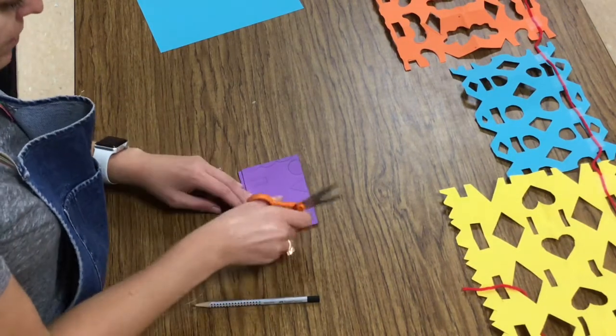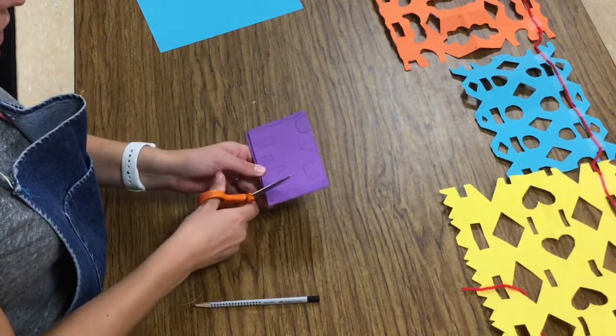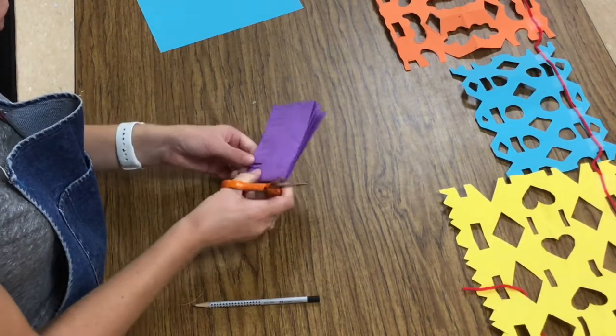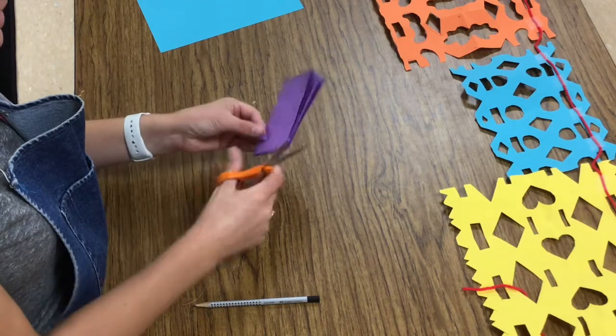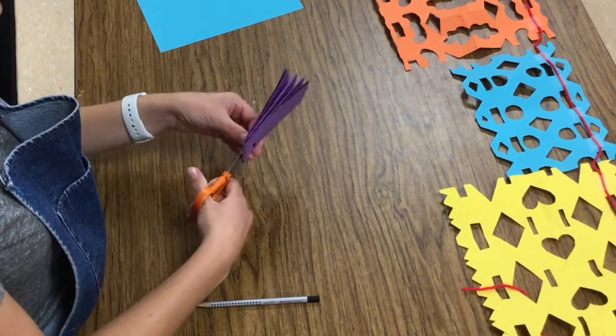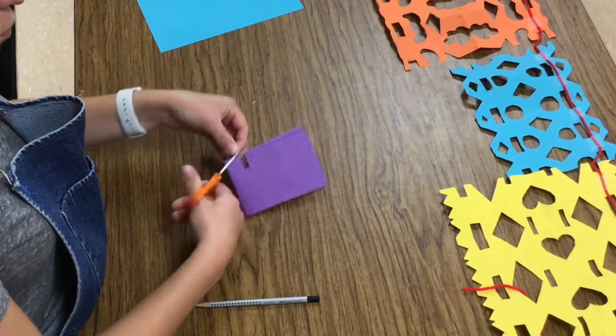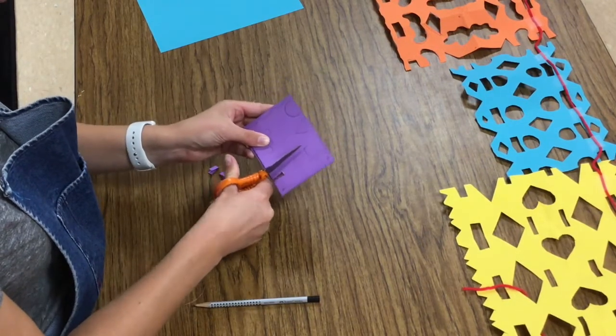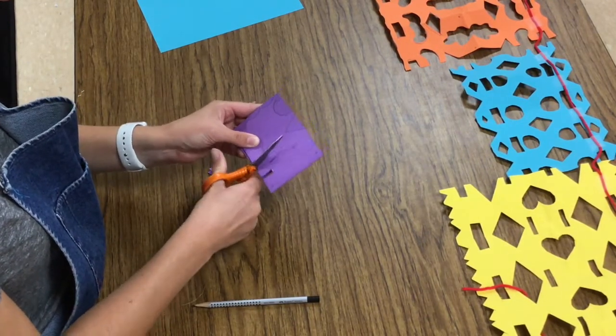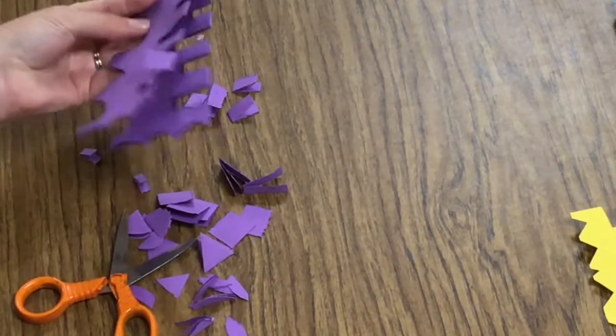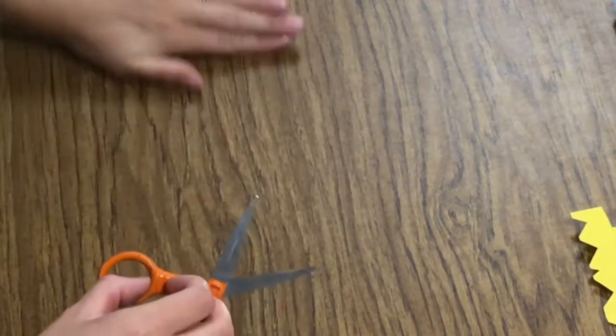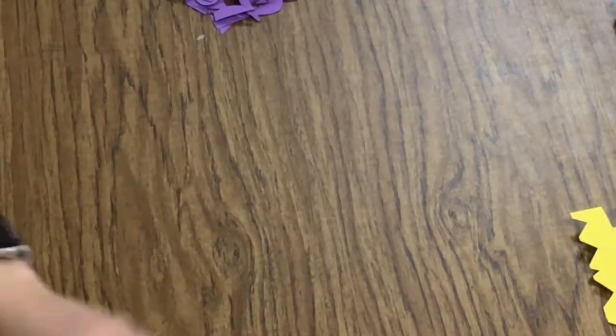I'm ready to cut. So I'm going to cut on those lines that I drew the best that I can. If you have ever made snowflakes, this is kind of a similar technique. I'm removing shapes to create some negative space. All right, I've cut out all of my shapes. I'm going to sweep these little scraps and make a pile. So that will be easier to clean up.